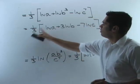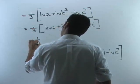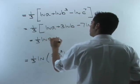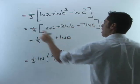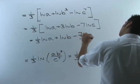And now the last thing to do is distribute one-third through to each of our terms. So our final answer will be one-third natural log of a. Now one-third times three gives us just one, so we have natural log of b. And then one-third times negative seven gives me negative seven-thirds natural log of c.